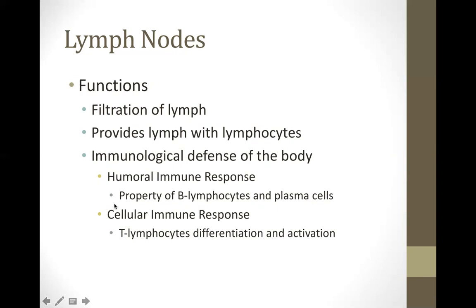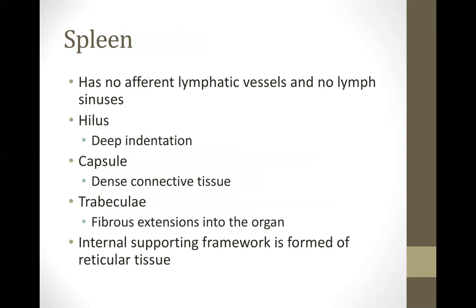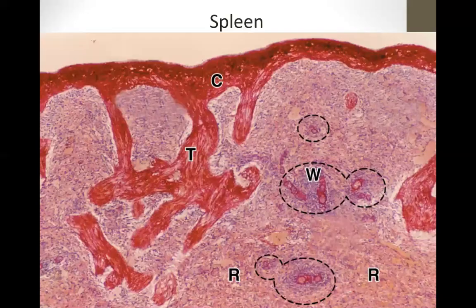We have now discussed the thymus and lymph node. The spleen is located at the left upper quadrant of the body. It has no afferent lymphatic vessels and no lymph sinuses. It is encapsulated with dense connective tissue, has trabeculae as fibrous extensions into the organ, and the stroma is reticular tissue. The spleen has no cortex, paracortex, or medulla — instead it is composed of two areas: white pulp and red pulp.